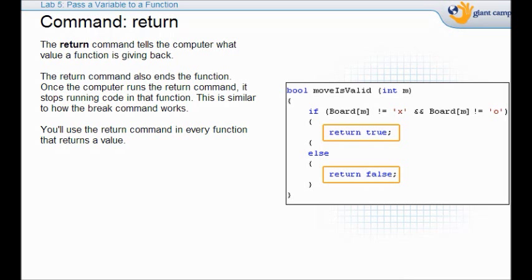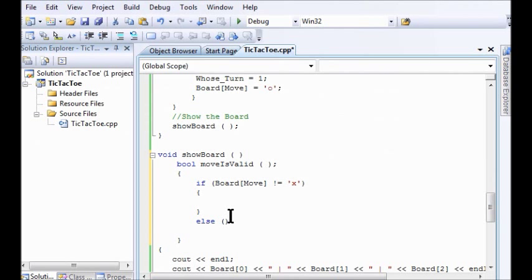So now we're going to introduce a command called return. The only thing the return command does is it tells the computer what value that function is giving back. It also ends the function. Once the computer runs the return command it stops running code in that function. So if this satisfies the condition, the return is going to end the command just like break did. It's like break. It's very similar to it. So that's what these codes do. You're going to use a return command in every function that returns a value. Don't forget that. So what do we put in here? So if it's not equal to x, I'm going to put in here return true. Else return false.